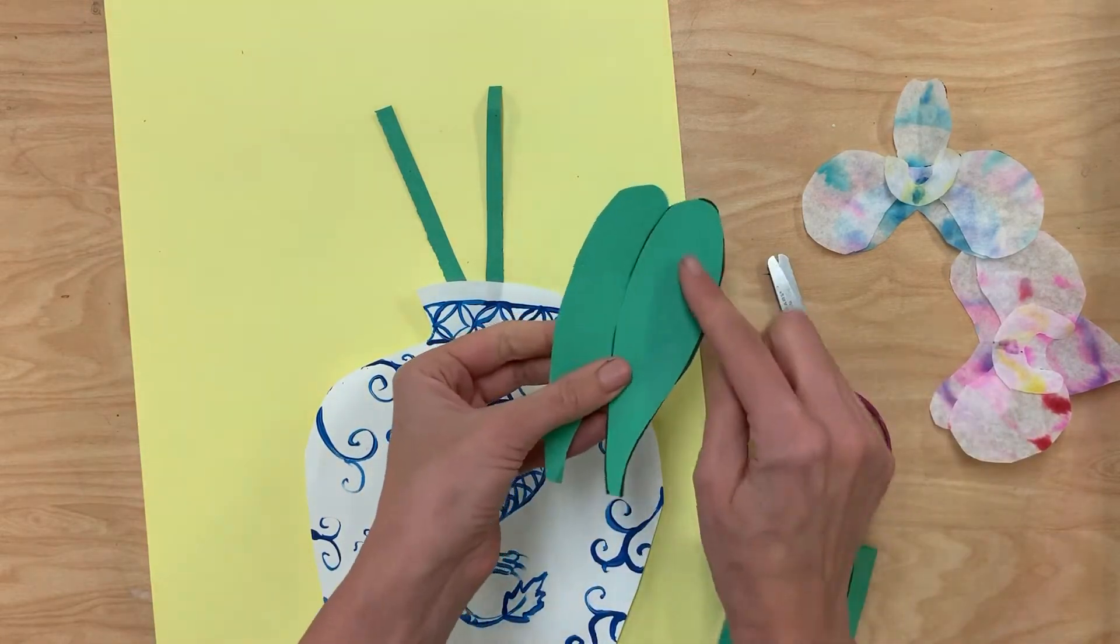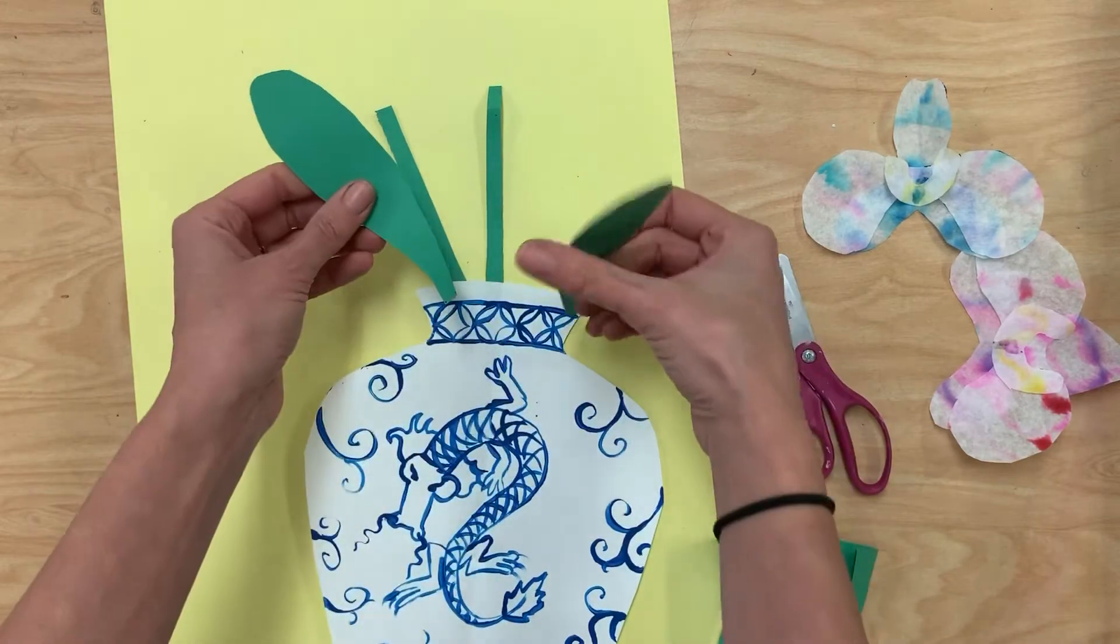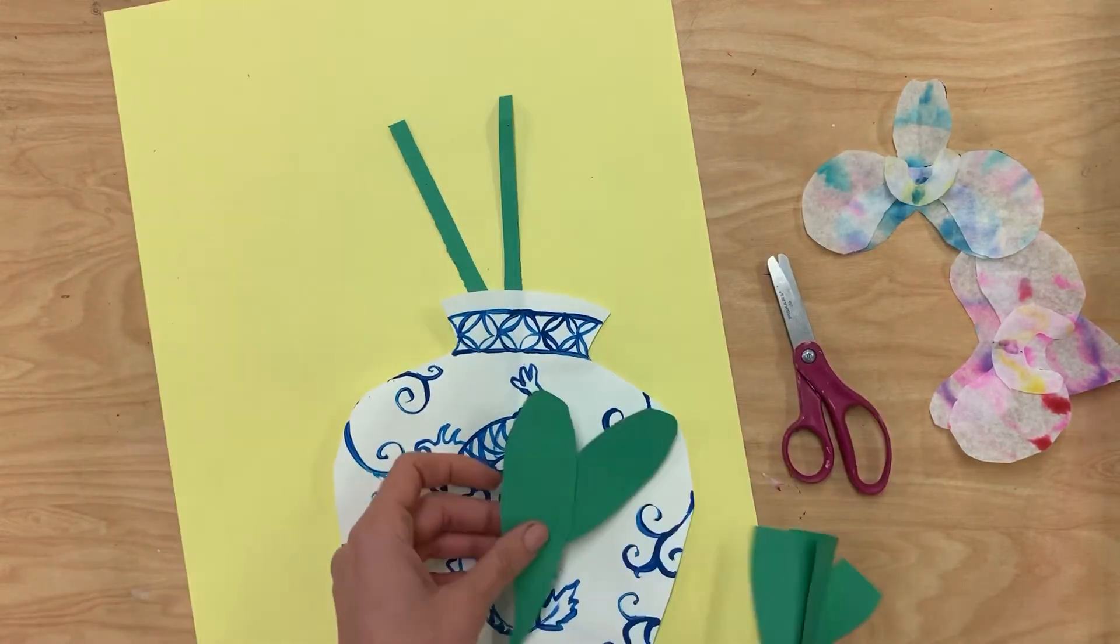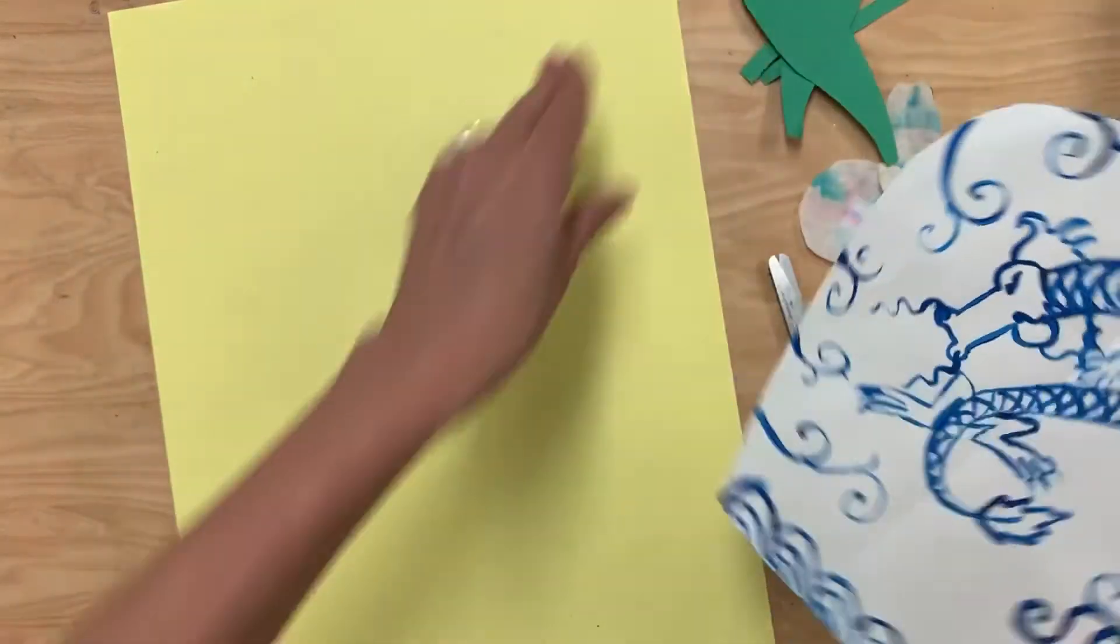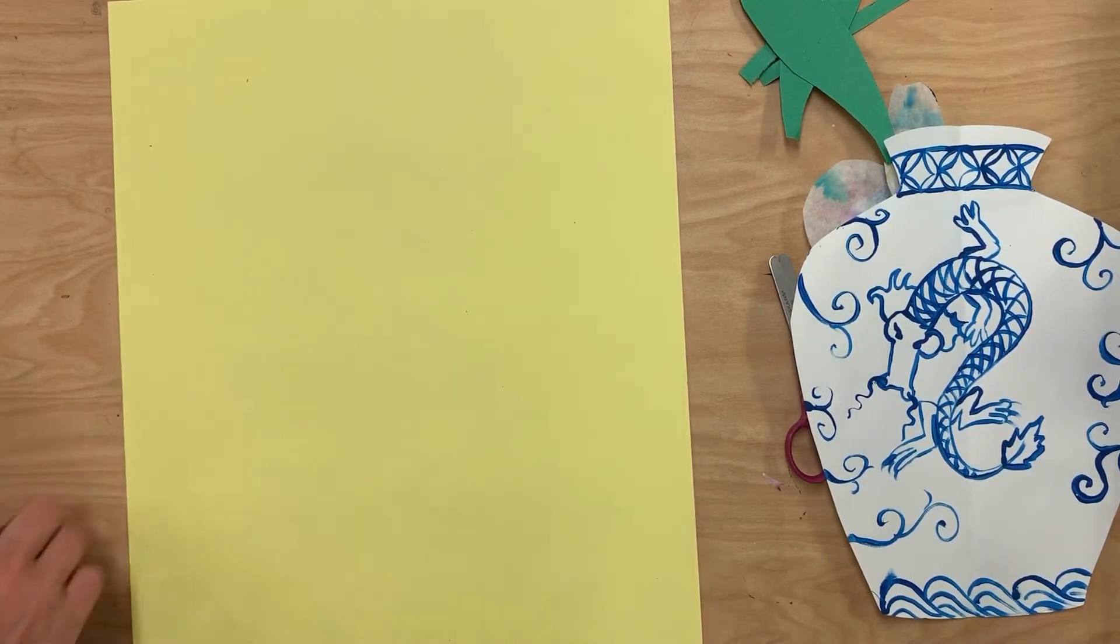All right. And when I glue this piece down, because I can still see the marker, I'm going to make sure that I actually turn it to the other side. All right. So at this point, I can finally glue everything down. So I've chosen yellow for my background paper. It's up to you what color you'd like to choose.